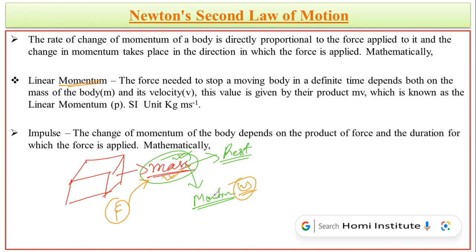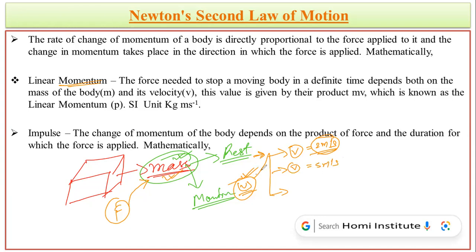If a body is moving at a certain velocity, there are three situations. First, if we want to maintain the same velocity — say 2 meters per second — then the same amount of force must be continuously applied. If velocity increases to 5 meters per second, the amount of force increases. If velocity decreases to 1 meter per second, then the amount of force decreases. So force is related in all cases.